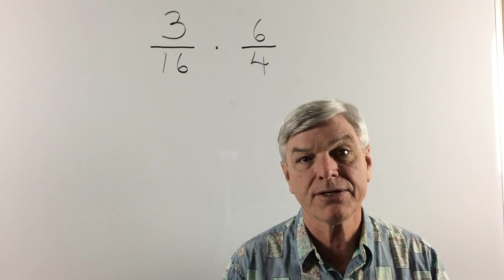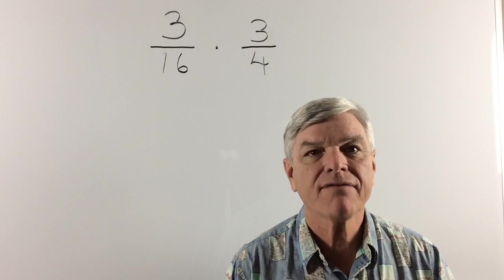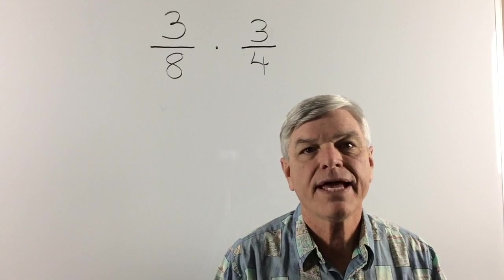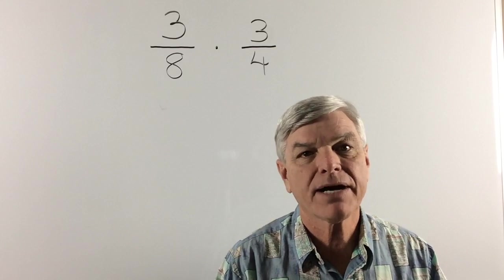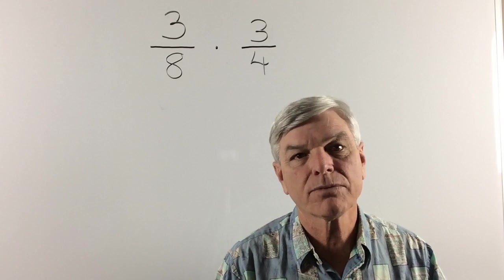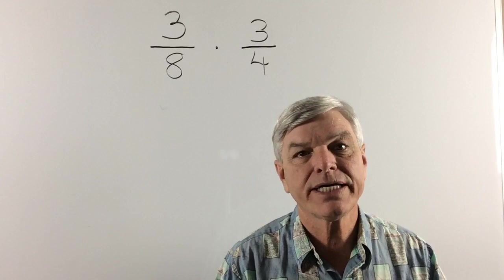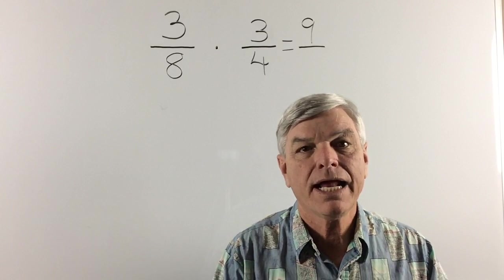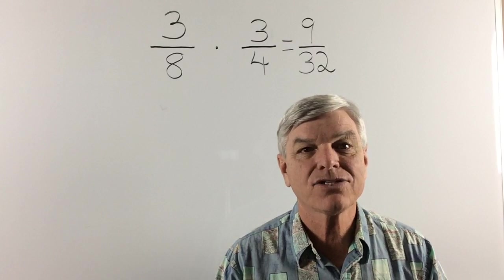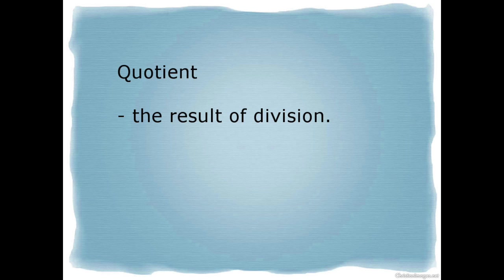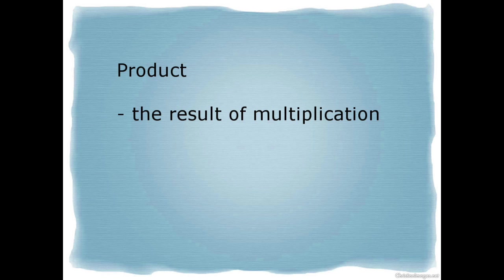And 16 can be divided by 2. And we have 3. And we have 8. And we've seen that the denominators cannot be divided by 3. So we are ready to multiply. 3 times 3 is 9. And 8 times 4 is 32. And that is our quotient. A quotient is the result of division. A product is the result of multiplication.